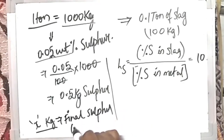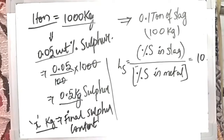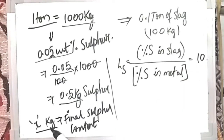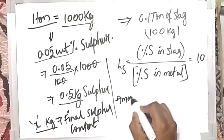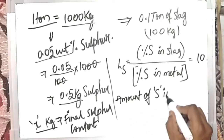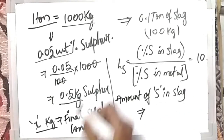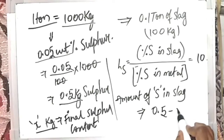I am assuming x kg as the final weight of sulfur present in the metal. The initial sulfur is 0.05 kg, so desulfurization reduces it to x kg. The remaining sulfur goes into the slag, so the amount of sulfur in the slag will be equal to the initial minus final, that is 0.05 minus x kg.